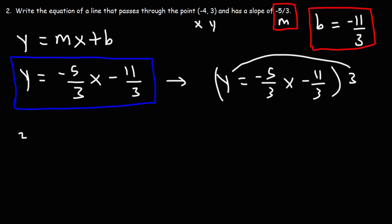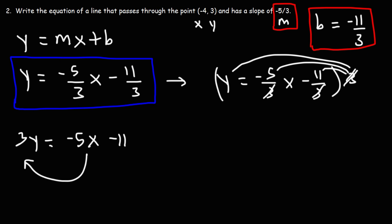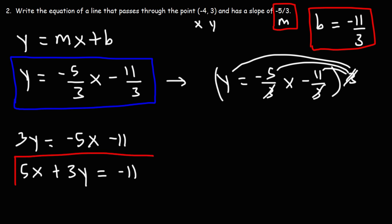Multiplying by 3: 3y = -5x - 11 (the 3s cancel on both terms on the right). Now moving -5x to the other side makes it positive 5x, so 5x + 3y = -11. That's the answer in standard form.